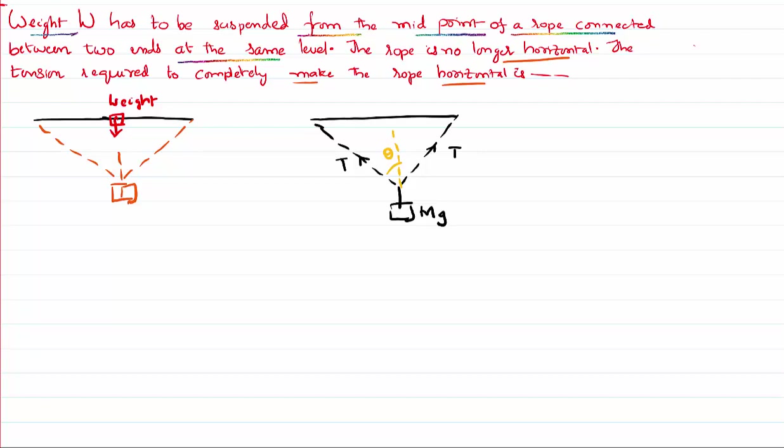This T can be now resolved into components as you have solved in previous problems. This is nothing but equal to T sin theta. The same can be done with the other T also. This will be another T cos theta. This will be another T sin theta. It's very clear that these two sine thetas are equal in magnitude, opposite direction acting on the same point. Therefore, they will cancel each other. They have no impact.